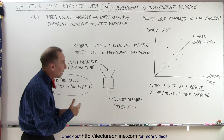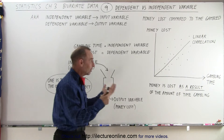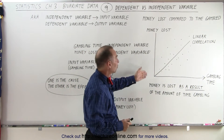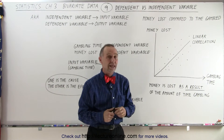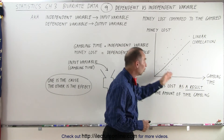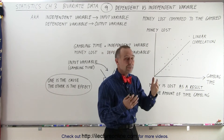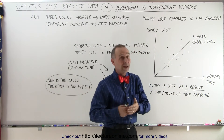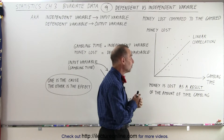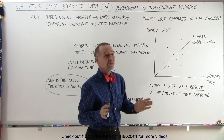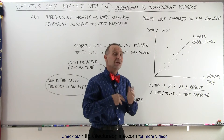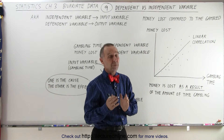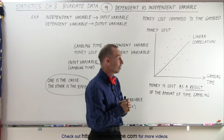For example, let's use the casino scenario: we spend a certain amount of time gambling, and typically that's related to a certain amount of money being lost. The longer you gamble, the more money you will lose — there's typically a linear relationship between amount of time gambled and amount of money lost. There are exceptions; some people come out with more money than they went in with, but that's not the norm.